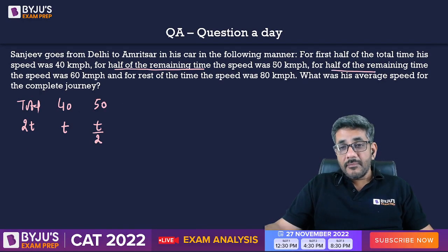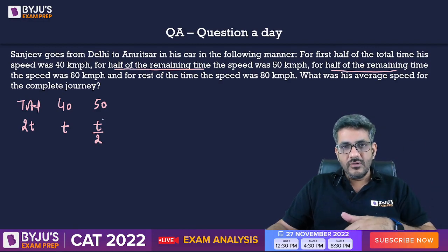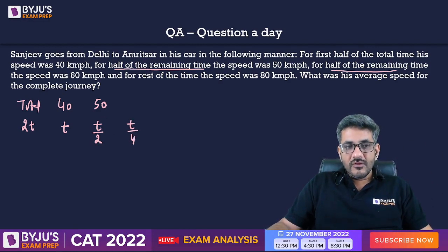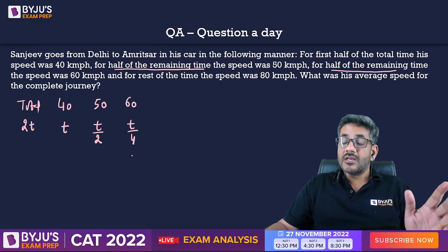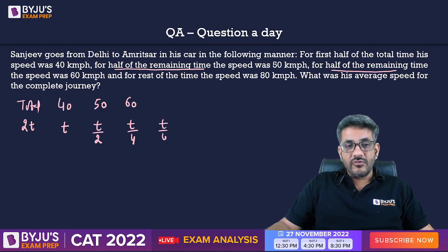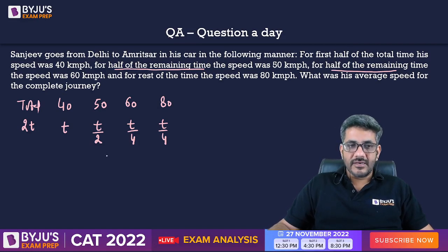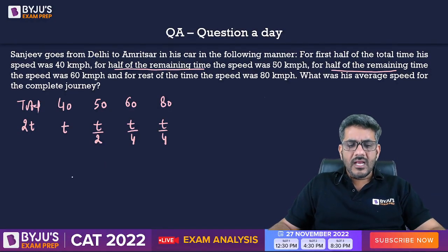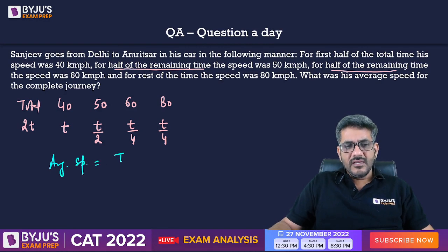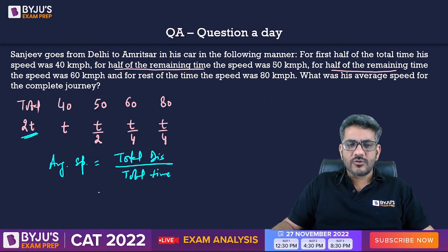Then for half of the remaining — after that, the remaining time is t/2, so half of t/2 is t/4. For t/4 time the speed was 60, and for the rest of the time — which is also t/4 — the speed was 80 km/h. The formula for average speed says it is total distance upon total time. I already have the total time as 2t; I just need the total distance.